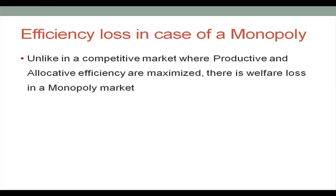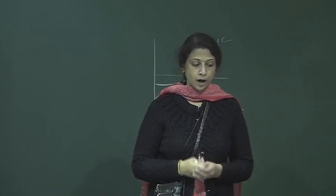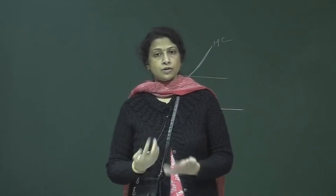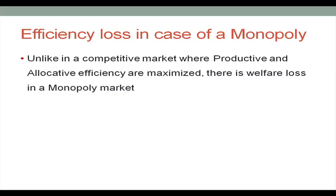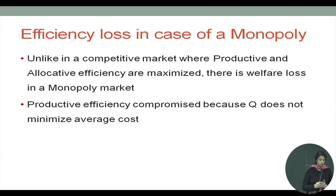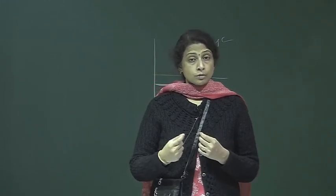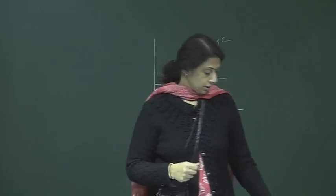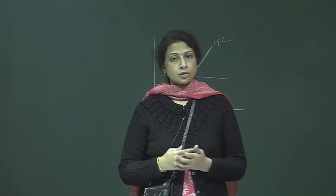In the case of a perfectly competitive firm, the long-run equilibrium achieves both productive efficiency and allocative efficiency. But in the case of a monopolist, unlike in a competitive market where productive and allocative efficiency are maximized, there is welfare loss in a monopoly market. Productive efficiency is compromised because the monopolist does not produce the level of output that minimizes average cost, and allocative efficiency is lost because price is more than marginal cost in the case of a monopoly firm.